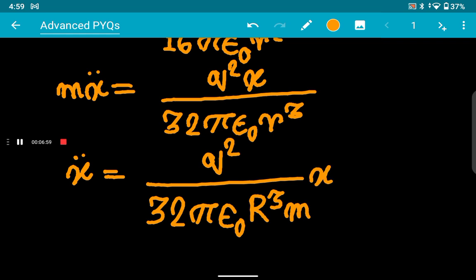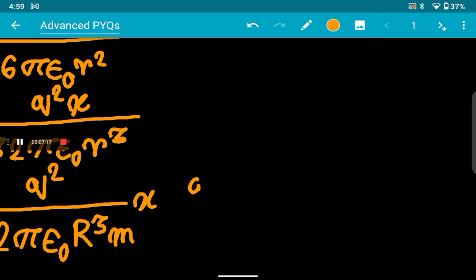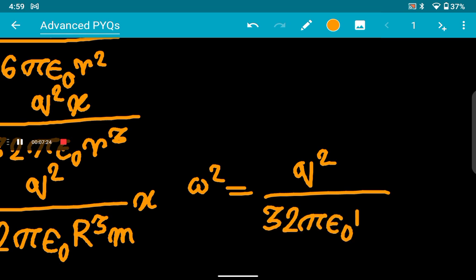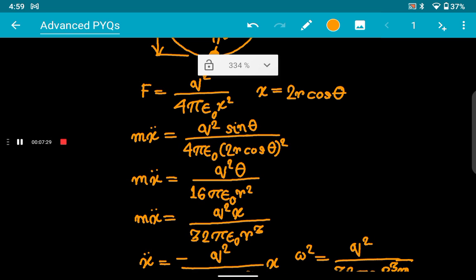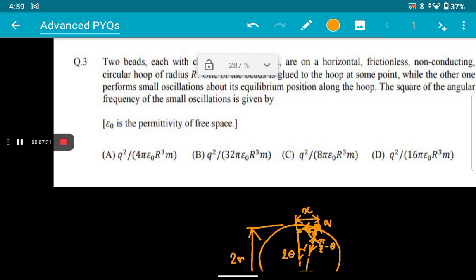And x will be multiplied here. You're all familiar that this is the SHM equation, and this is ẍ, which is nothing but d²x/dt² = -ω²x. If you compare that with this, then you will get that ω² is this. So your ω² is nothing but this whole thing: q²/32πε₀R³m.